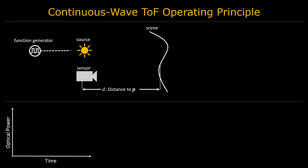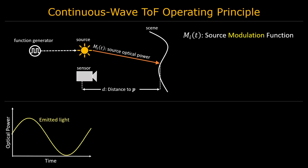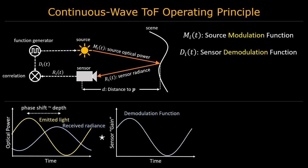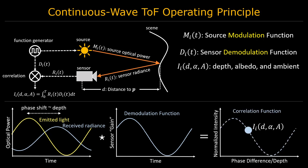Continuous wave time-of-flight cameras work by periodically modulating the intensity of a light source according to the source modulation function. The radiance incident on the sensor will be a shifted and scaled modulation signal. This signal is then correlated with the sensor demodulation function. The resulting intensity measurement will be a function of ambient illumination, effective albedo, and the phase difference between modulation and demodulation signals. Therefore, 3 or more intensity measurements are required to solve for these 3 unknowns.